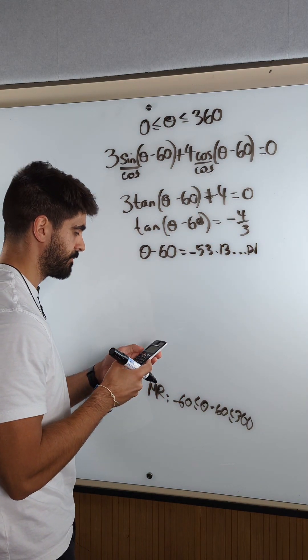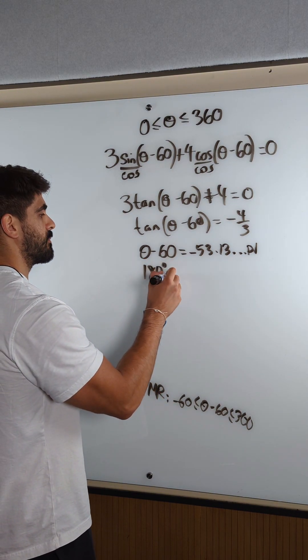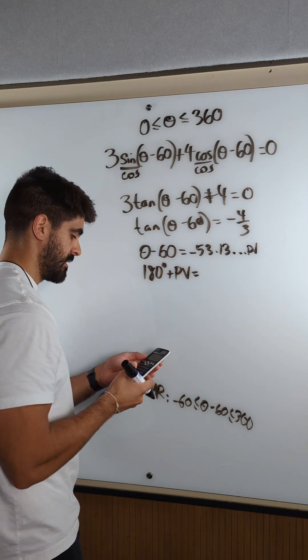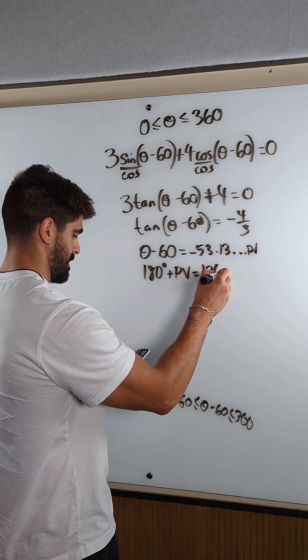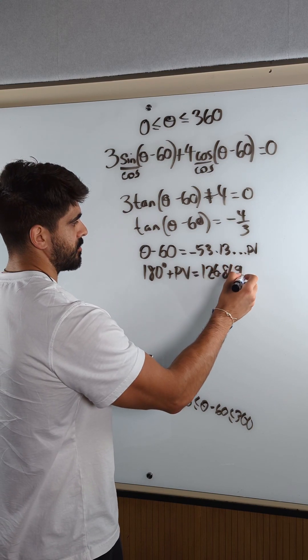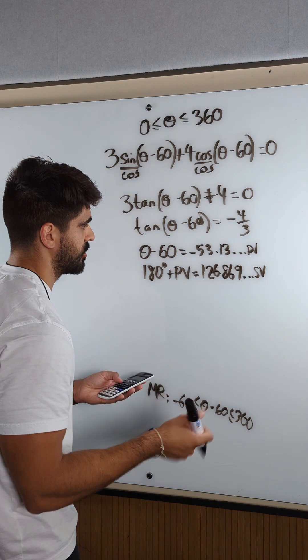How do I get the secondary value for tan? You do 180 plus the primary value. So 180 plus the answer, I get 126.869 etc. I'm going to store that as b, so I can use it later on.